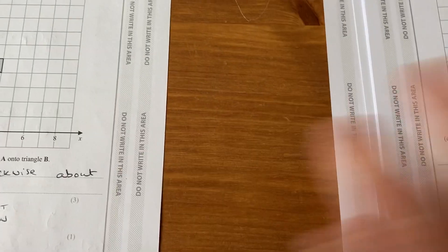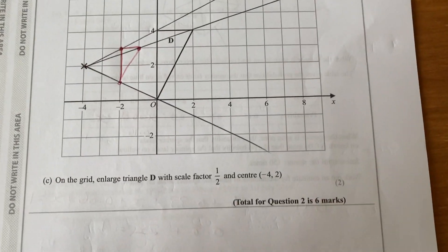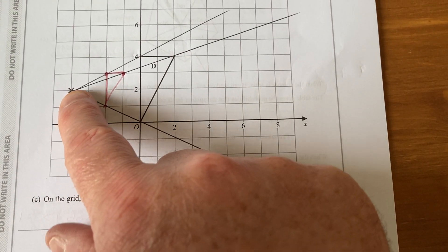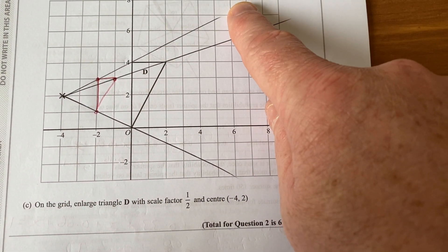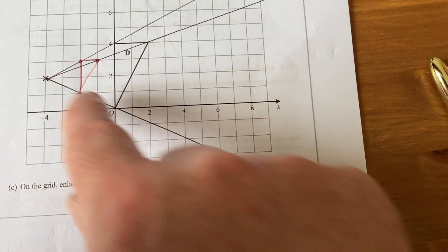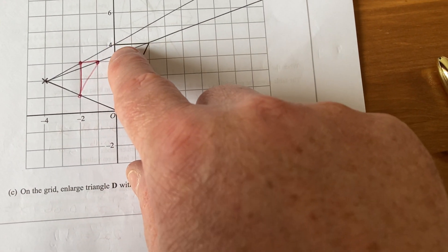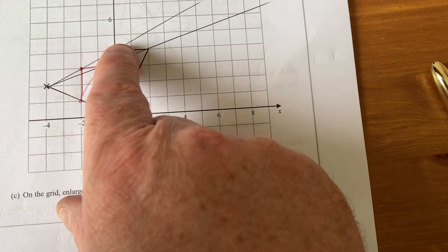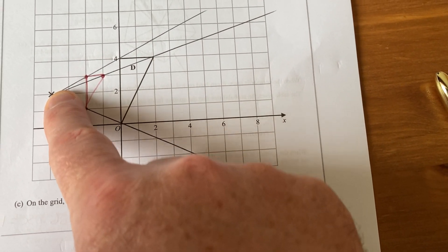Part C is an enlargement scale factor of a half. So I've used the center of enlargement. I've drawn a line out through each individual corner on the original shape, and you need to half the distance back towards the center of enlargement.